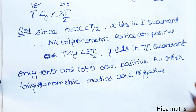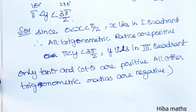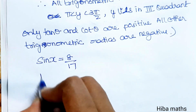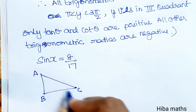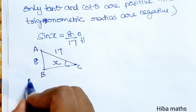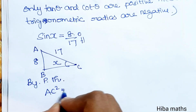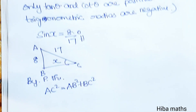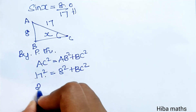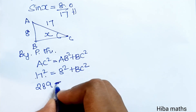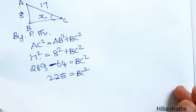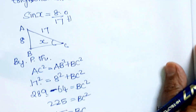Given sin x is equal to 8 by 17, using a right angle triangle with opposite side 8 and hypotenuse 17, we apply Pythagoras theorem: AC squared equals AB squared plus BC squared. So 17 squared equals 8 squared plus BC squared. 289 minus 64 equals BC squared, giving 225 equals BC squared. Since 225 equals 15 squared, BC equals 15, which is the adjacent side.